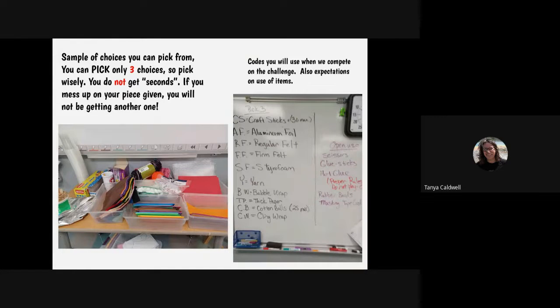Your team will be given three choices of materials. So if you look on the right-hand side, those materials are: craft sticks, a maximum of 30; a sheet of aluminum foil; a sheet of regular felt; a sheet of firm felt; a sheet of styrofoam; yarn; a small sheet of bubble wrap; thick cardstock paper; cotton balls up to 25; or cling wrap. So your group is only going to be able to pick three items.